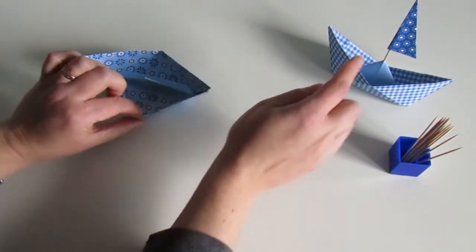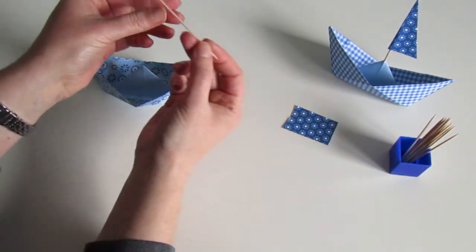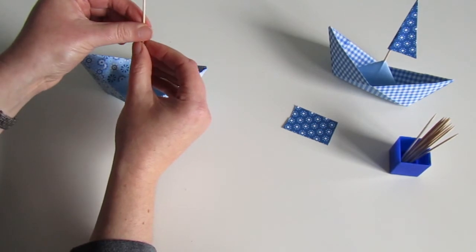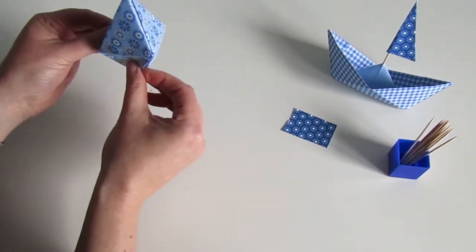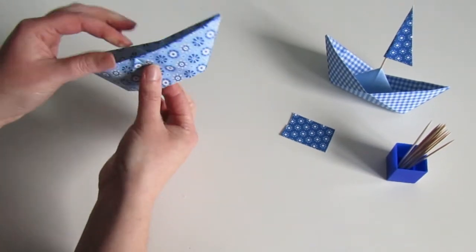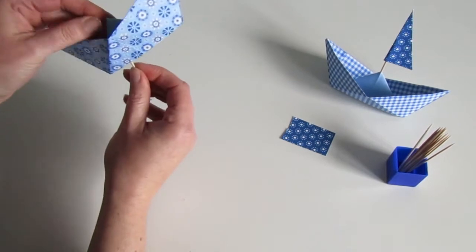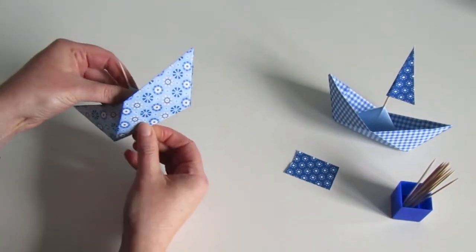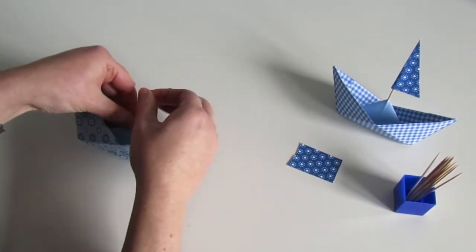If you want to turn it into a sailing boat like I've done, all I used was one of these little cocktail skewers. The first thing really is to very gently and carefully, watch your fingers, poke it up through the middle and out the top. Now you could leave it like that if you want.